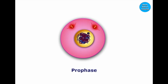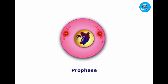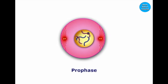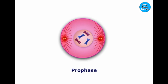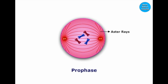During prophase, the centrosome divides and the two centrioles move towards the two poles. Chromatin fibers start to condense, and the nuclear membrane and nucleolus disintegrate and disappear. Spindle fibers appear from the centriole; aster rays and centriole make an aster in an animal cell.